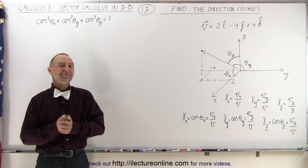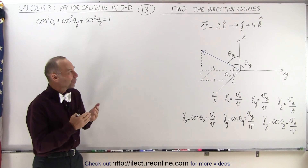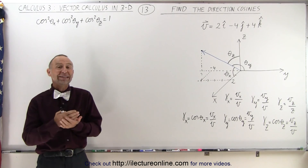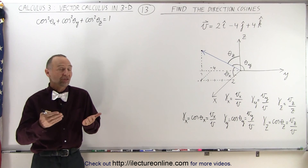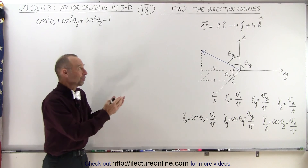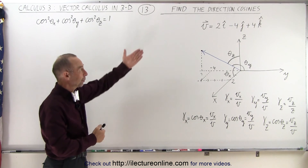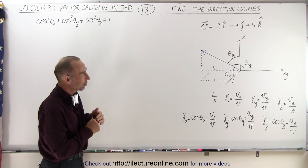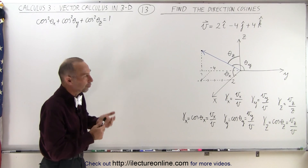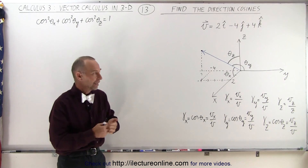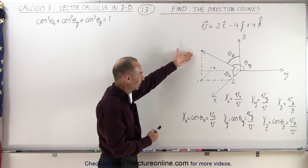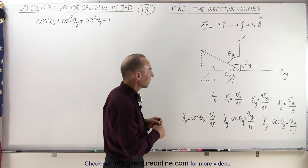Welcome to my lecture online. Here we're going to take a look at how to find the direction cosines of some arbitrary vector. There we have the vector 2i minus 4j plus 4k, and for our benefit I've taken a little drawing of it.